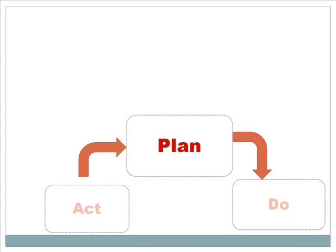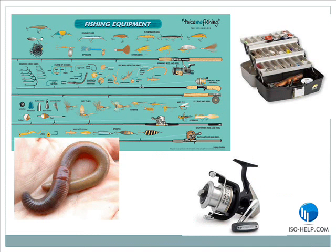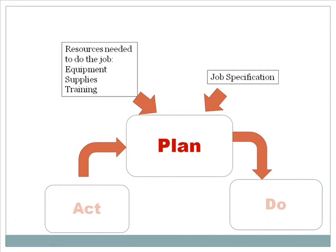The first step in every fishing trip is the plan. In the planning stage, you make sure you have the proper resources, equipment, expertise or training, and everything else you need to do the job. In fishing, that means you have to use the right kind of bait, fish in waters where there are known to be fish, go with the kind of equipment you need, and go at the time of day that you know the fish will be biting. The planning step is highly dependent on the job specification. The resources must be appropriate for the job.